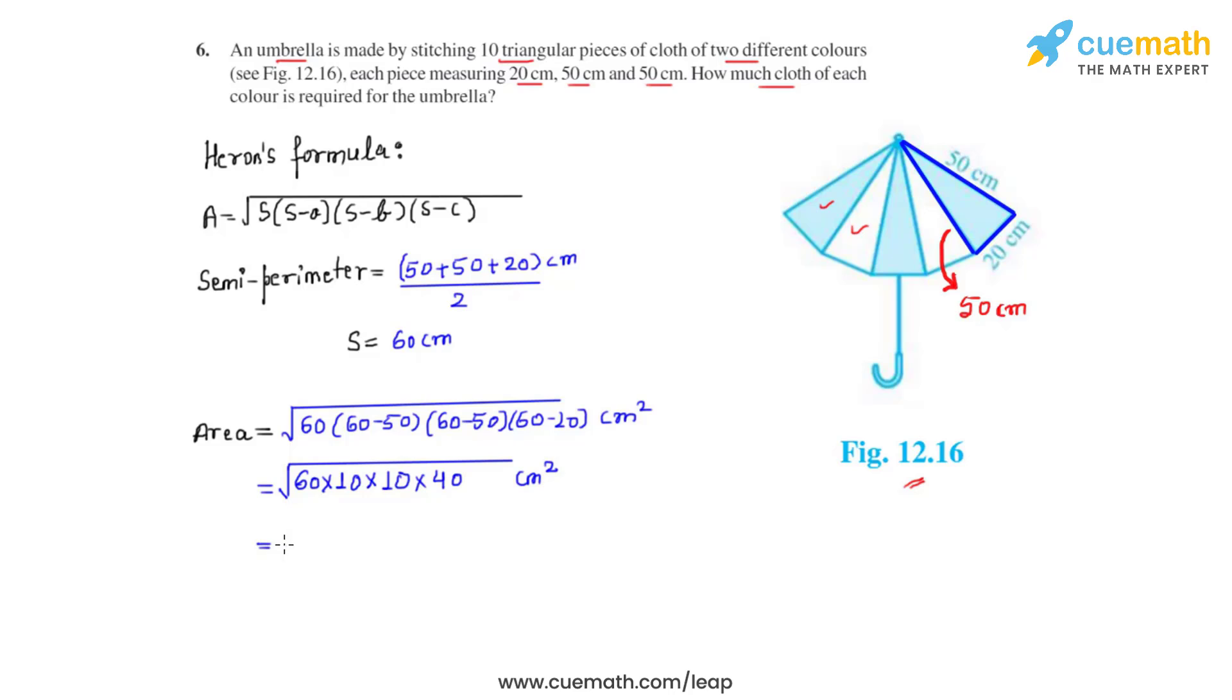On further calculation, this gives us the area of one such triangular piece of cloth to be equal to 200 root 6 centimeter square.